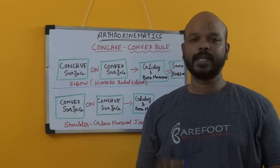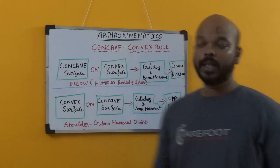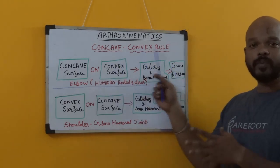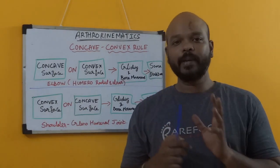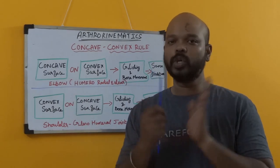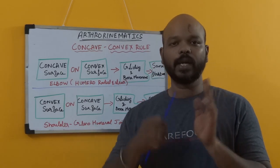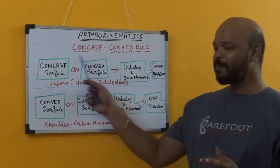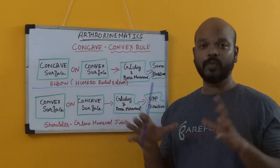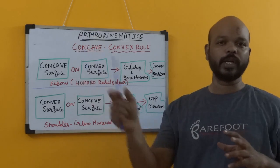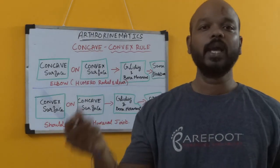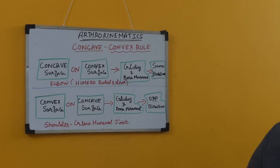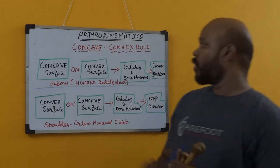Now that we have seen what happens in arthrokinematics, there is a very important concept we must know: the concave and convex rule. When we speak about arthrokinematics and two joint surfaces, one surface will be concave and the other will be convex. There is a principle you need to keep in mind before applying any manipulative or mobilizing technique.